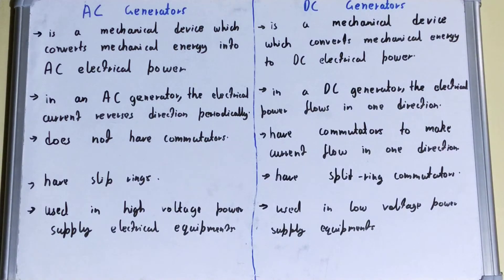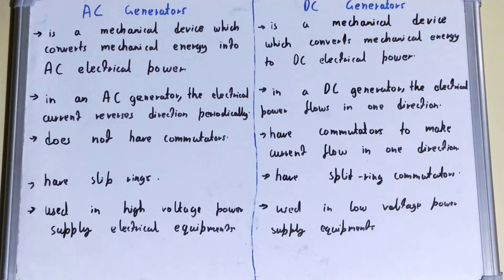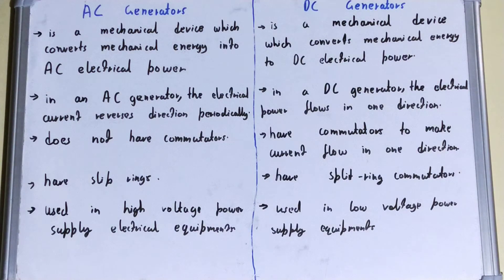Regarding their uses: AC generators are generally used where high voltage power supply electrical equipment is used. In the case of DC generators, they are used in low voltage power supply equipment. That covers the difference between AC generators and DC generators.